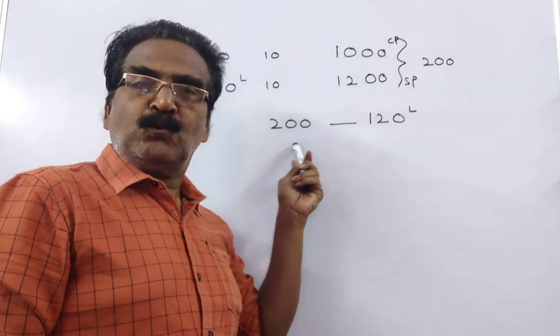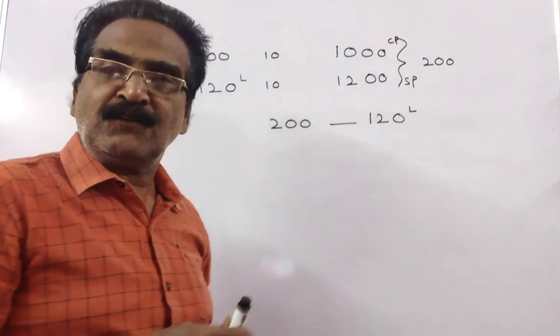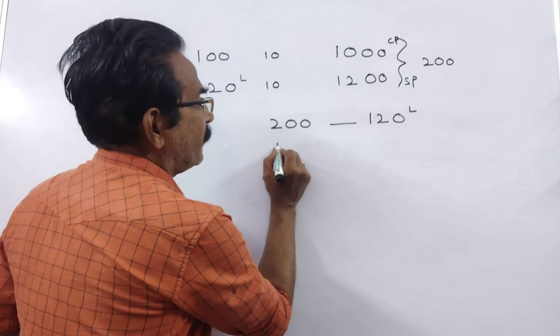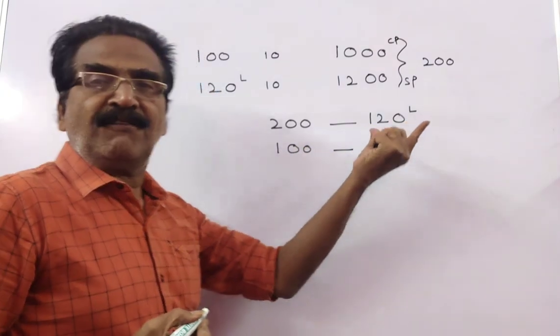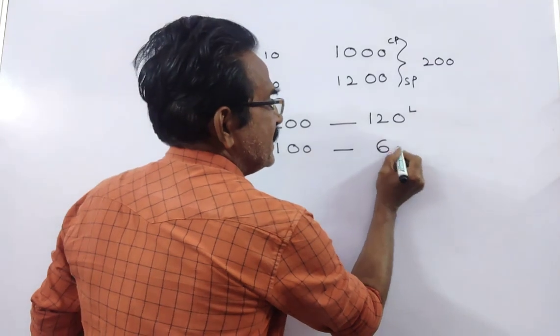To earn a profit of rupees 200, he must sell 120 liters. To earn a profit of rupees 100, he must sell half of 120, that is 60 liters.